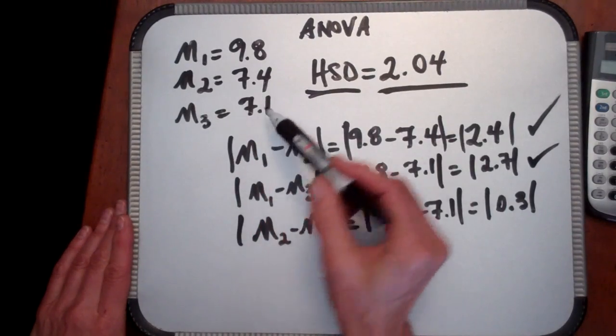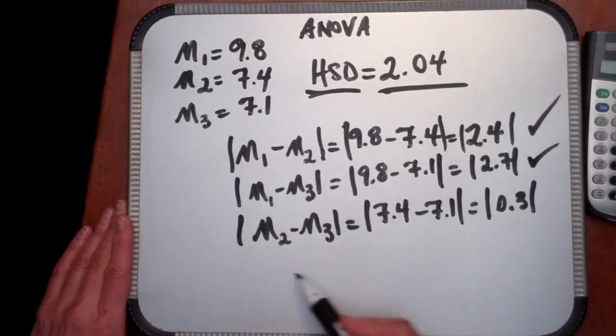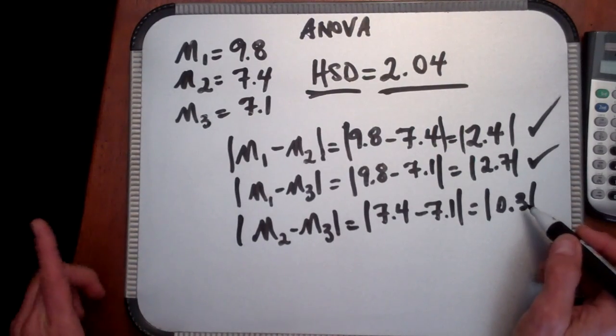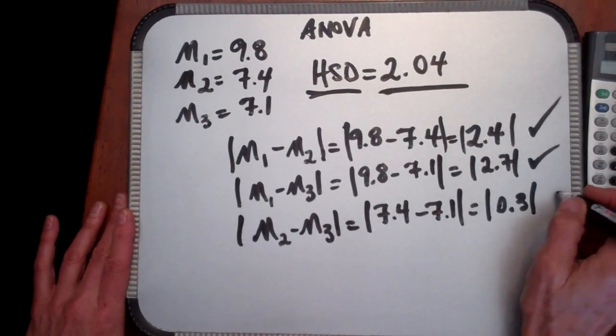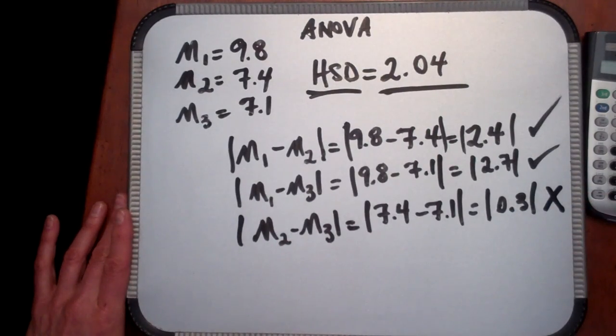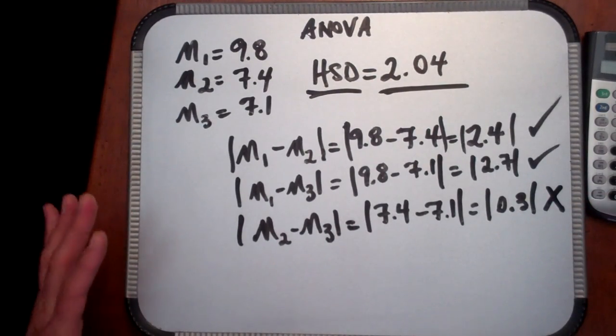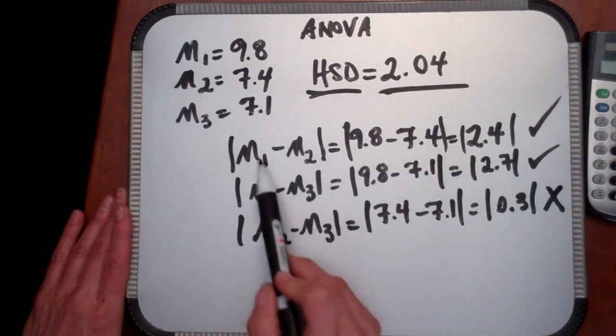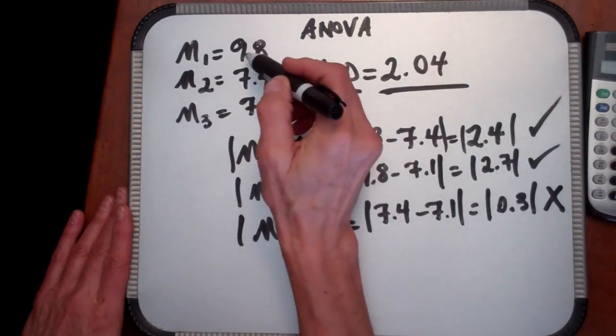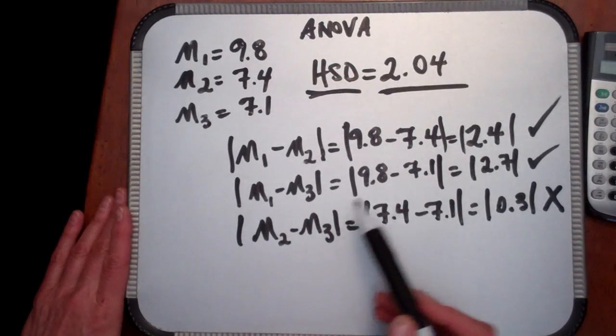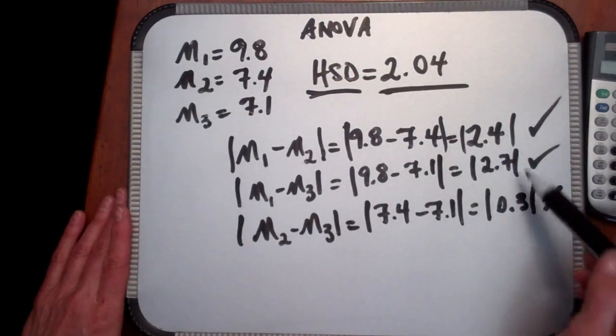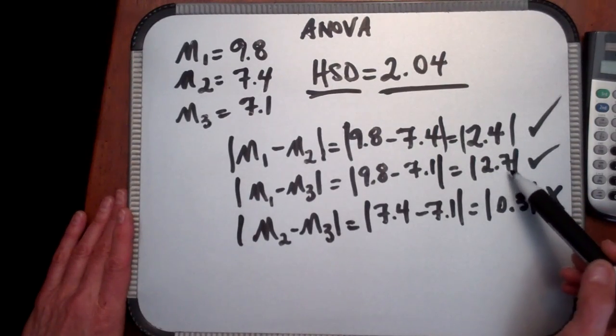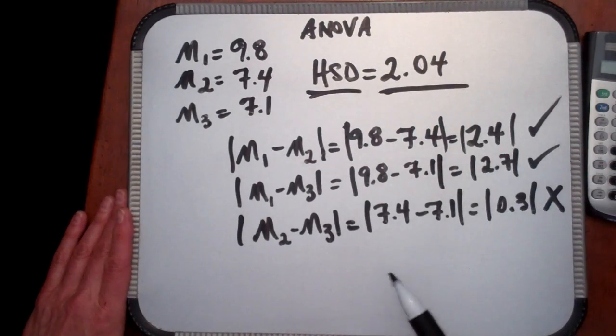When we compare group 2 and group 3, the low-dose group to the control group, we find that the difference of 0.3 is not exceeding the HSD, and consequently we say that that is not a significant difference. So now what we've seen by comparing the absolute differences between mean values, when we compare these to the HSD, we determine where significant differences lie by seeing which of these values, these difference values, exceeds the HSD.